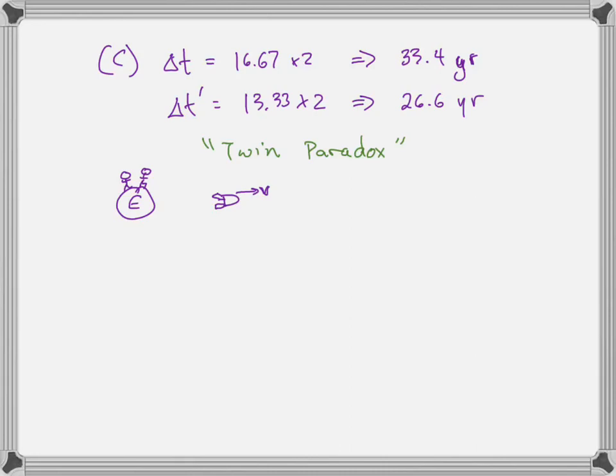You say, but wait a second, there is a paradox here. Because instead of making the Earth the stationary reference frame and the spaceship the moving reference frame, why don't I just do it the other way around and say, let me erase those and say that, let's make the spaceship the stationary reference frame, and the Earth is moving at speed v away from the spaceship.